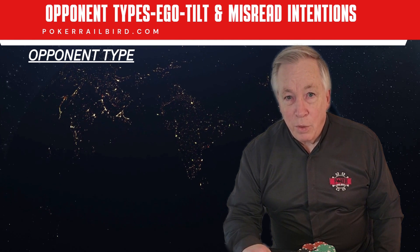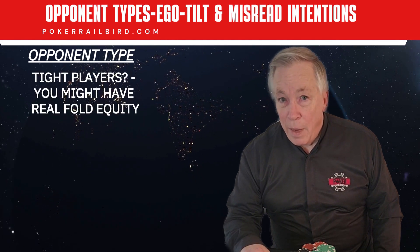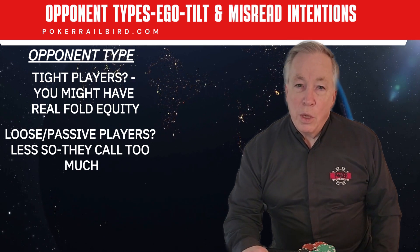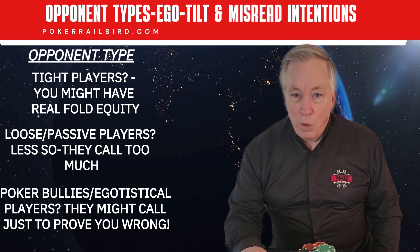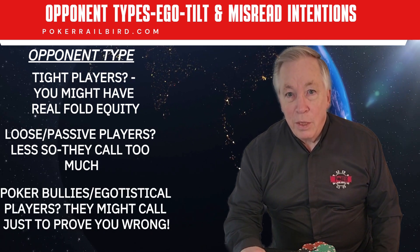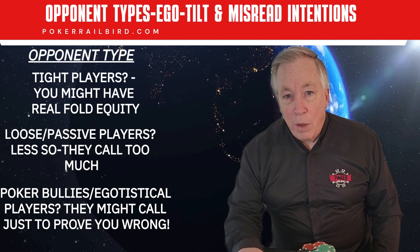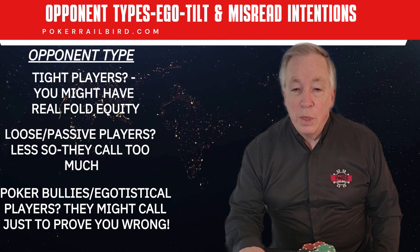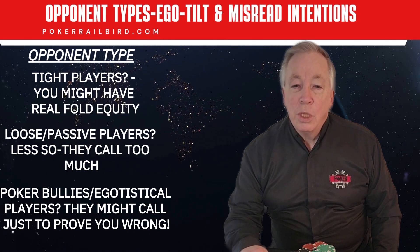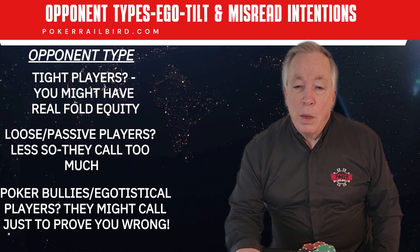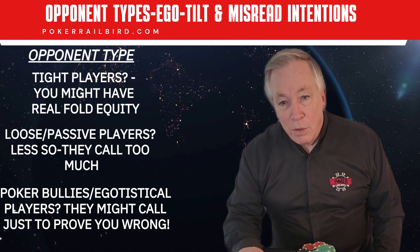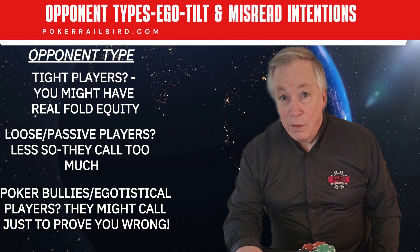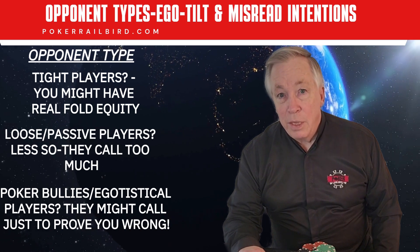You also need to ask: who am I trying to get to fold? Tight players? You might have real fold equity. Loose passive players? Less so — they call too much. Poker bullies or egotistical players? They might call just to prove you wrong. Sometimes you're not just betting against a range. You're betting against a personality. And when your opponent's identity is tied to aggression, pride, or image — you're not getting that fold, no matter what your HUD or math chart says.